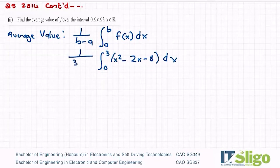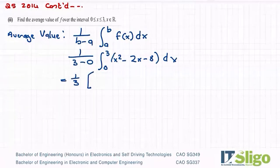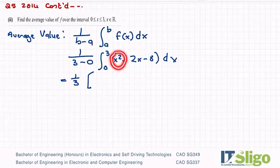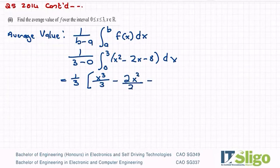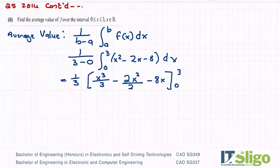So let's integrate it. So 1 over 3 minus 0, so it's a third of. So x squared, go up a power, divide by the new power, up a power, divide by the new power, minus 2x, go up a power in x and divide by the new power, go up a power in x. And that's between 0 and 3.